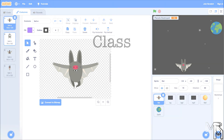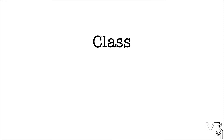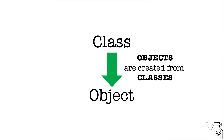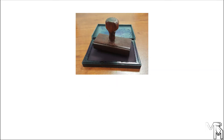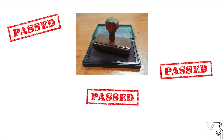Another basic concept of OOP is class. Simply put, an OOP object is created from a class. You write code for classes, and then use these classes to create objects. A natural question is, why make things so complicated? Why can we not just write code for objects directly? Well, one reason is that you can use one class to create multiple objects. There are many analogies for the class-object relationship. One of them is that a class is somewhat similar to a rubber stamp — you can use one stamp to create a bunch of similar images.